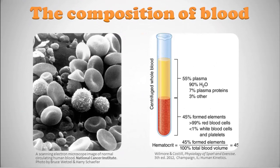Let's look at some pictures. On the left side of the slide we're looking at a scanning electron microscope image of normal circulating human blood. You can see a lot of red blood cells — that's 99% of the formed elements — floating around in plasma. If you put that blood in a centrifuge and spin it at really high speeds, it causes a separation of the formed elements from the plasma.